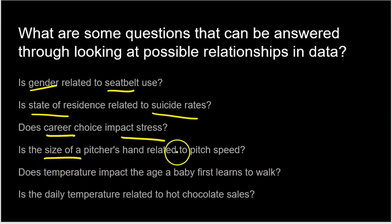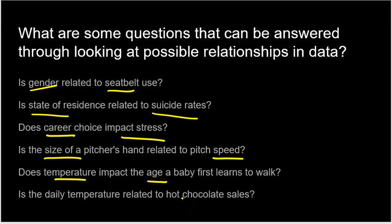Is the size of a pitcher's hand related to pitch speed? Those are both quantitative variables — size of the pitcher's hand is something we measure, and speed is something we measure. Is there a relationship? If you have a bigger hand, can you pitch faster? Does temperature impact the age that a baby first learns to walk? Again, those are two quantitative variables.